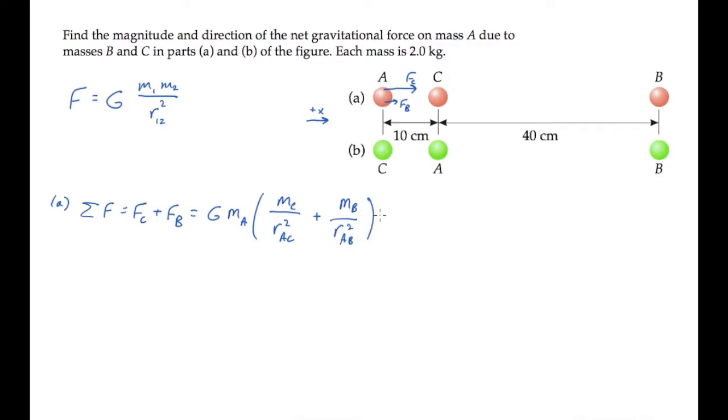Substituting all the known values and calculating, we find that the net gravitational force on mass A is 2.8 times 10 to the minus 8 newtons. Its positive value shows us that the force is directed to the right.